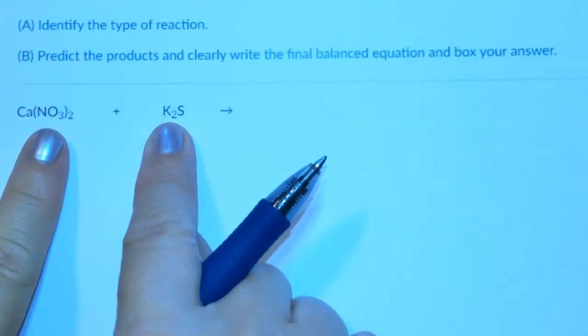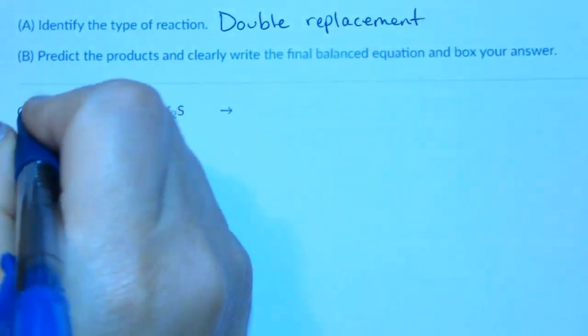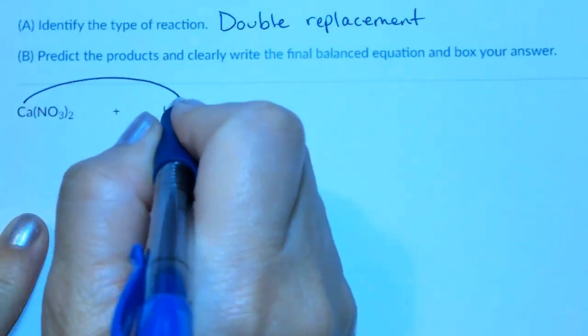We have an ionic compound plus an ionic compound, which makes this a double replacement reaction. Once you know that it's a double replacement reaction, you're going to put first and last together.